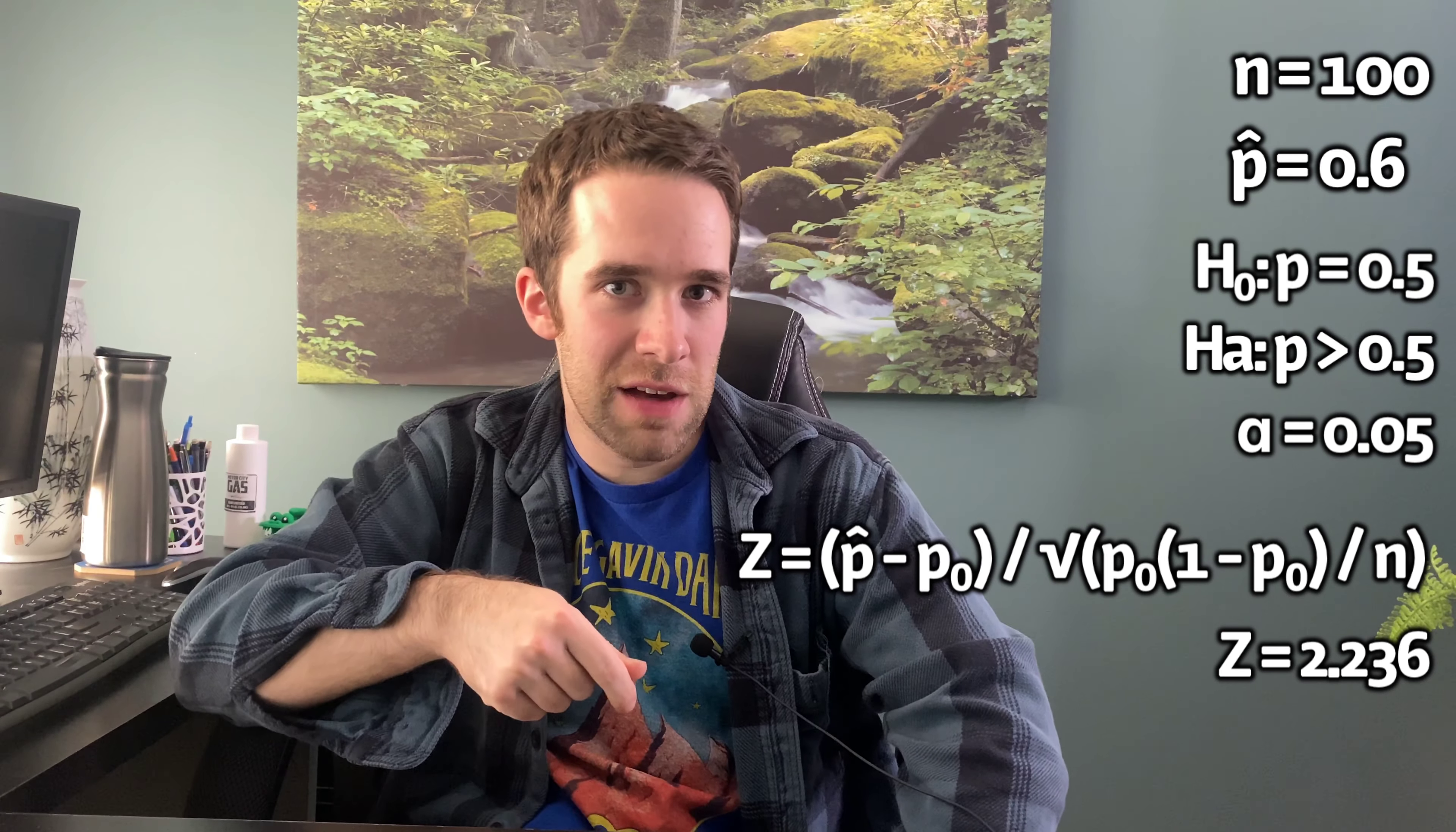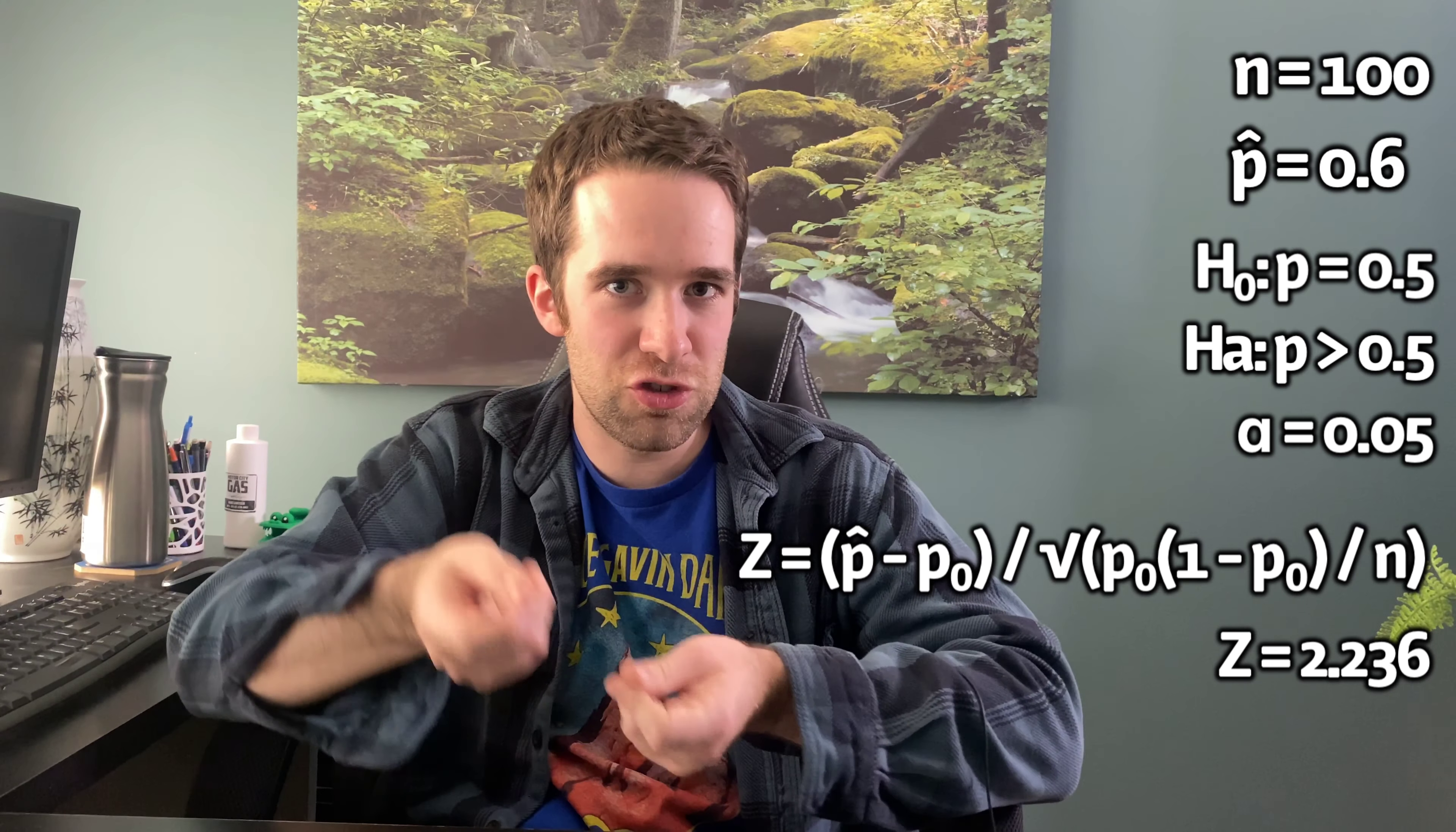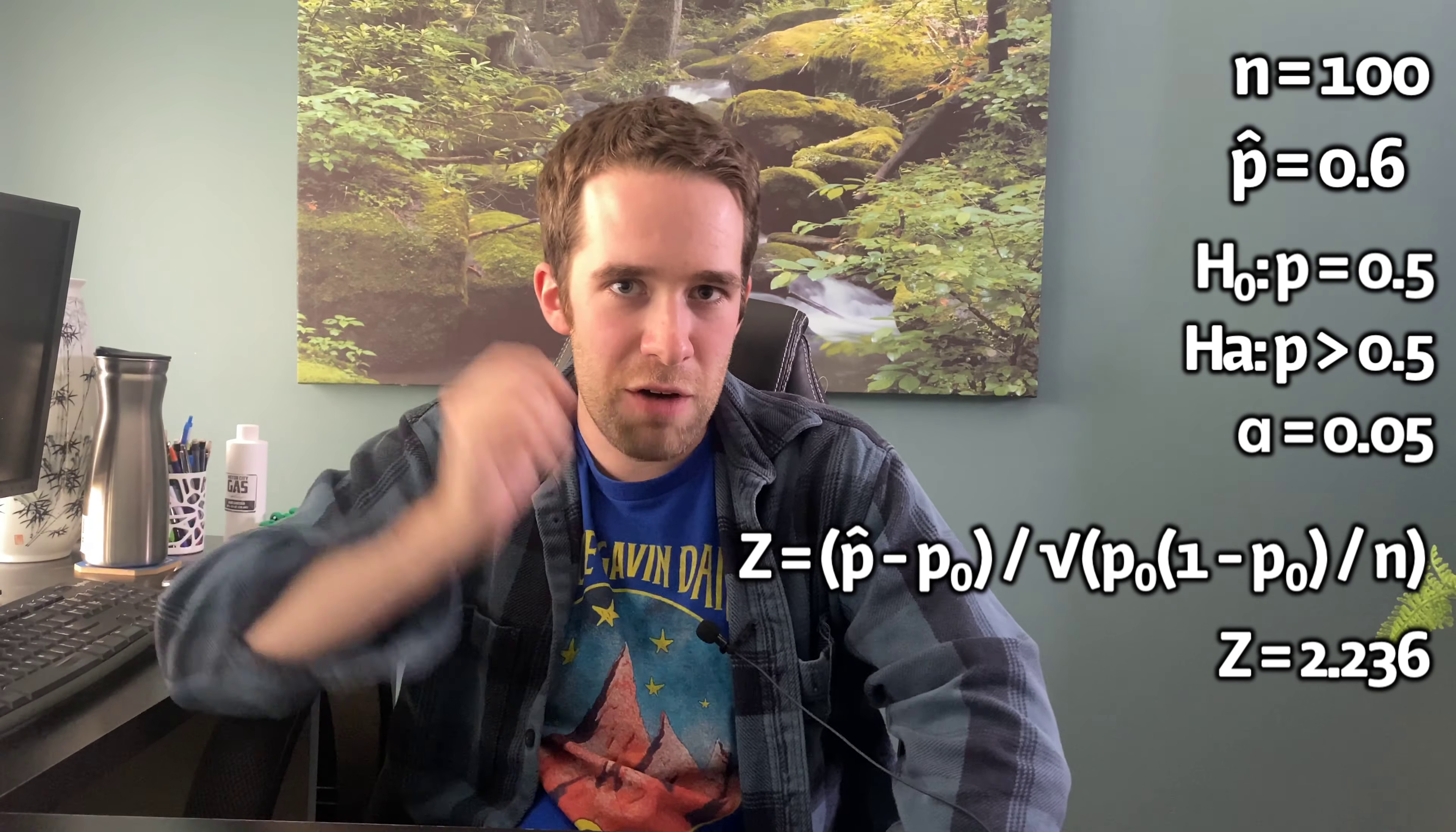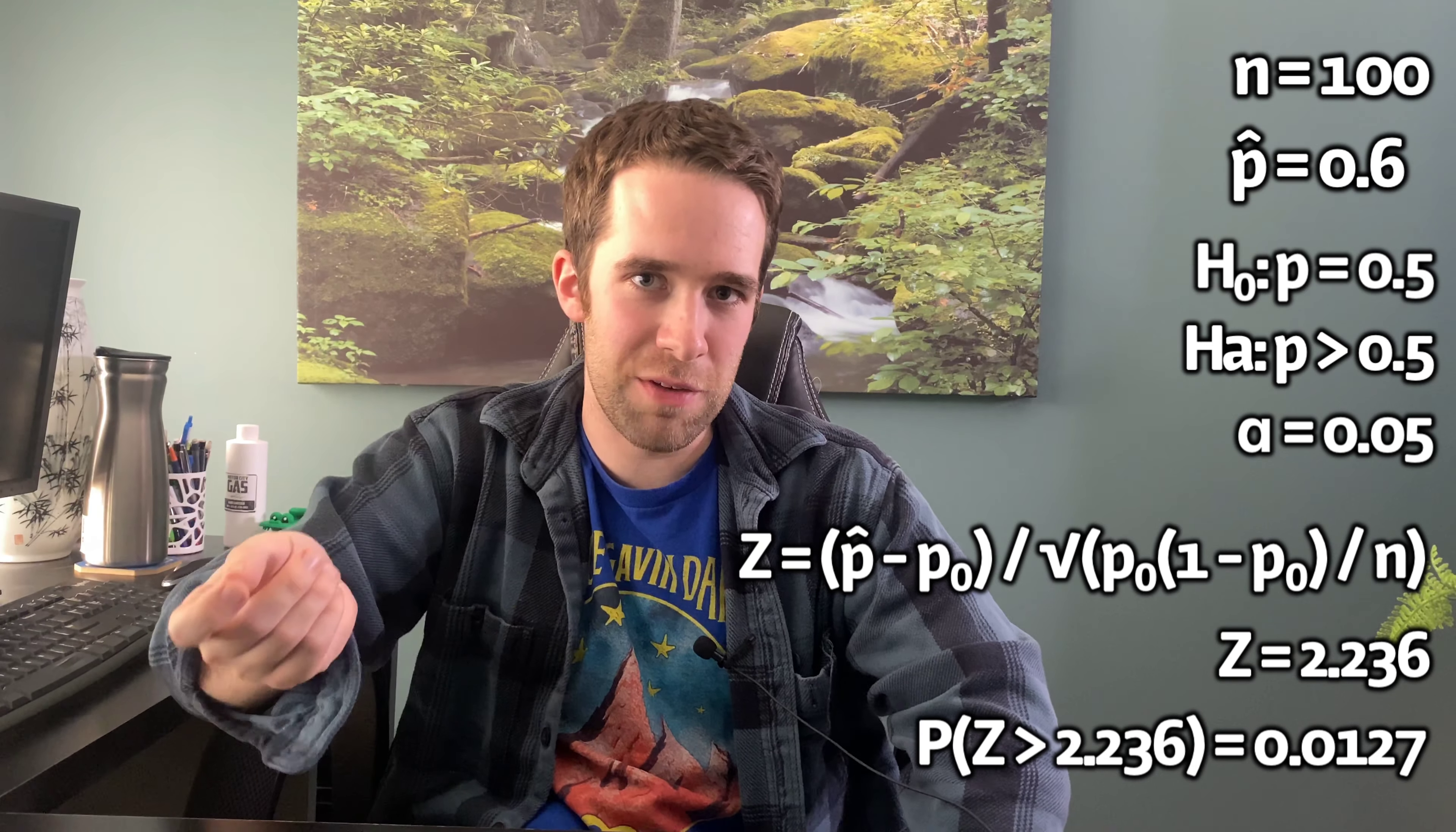Like I said right at the beginning of this video, that Z-statistic is a normally distributed random variable with mean equal to 0 and standard deviation equal to 1. So, I'm looking for here as my P-value, the probability that we observe in a standard normal distribution, a value of Z equals 2.236 or greater. Again, use a table like this or use R. I get a P-value of 0.0127.